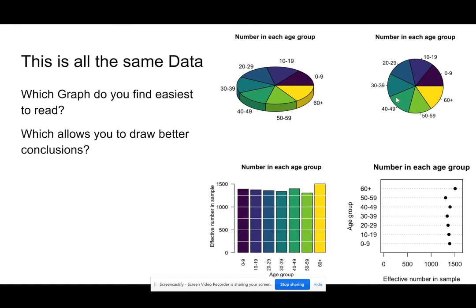There are lots of different types of graphs, and they're supposed to provide meaning for the data. Looking at this, these are all the same data set, just graphed differently. It should be easy to tell which one gives you the best way to draw conclusions from that data set.